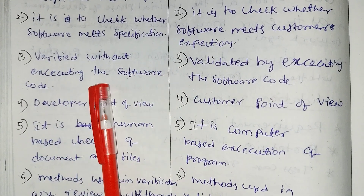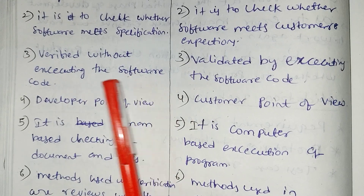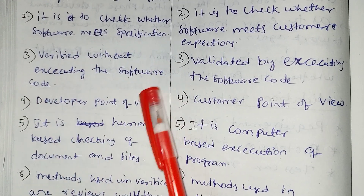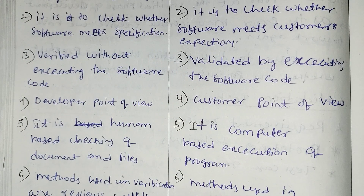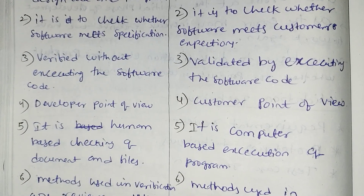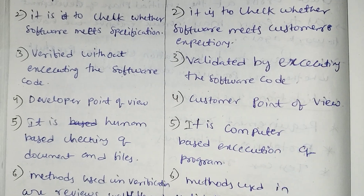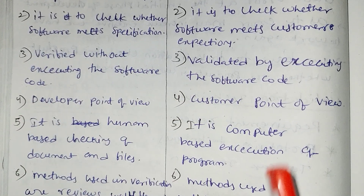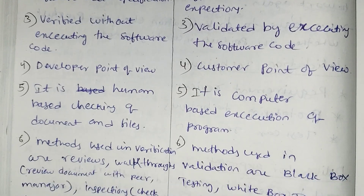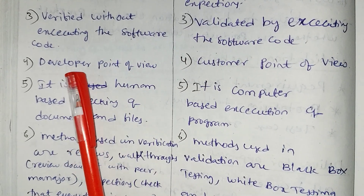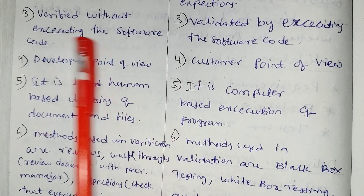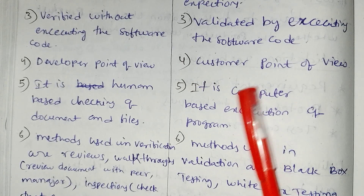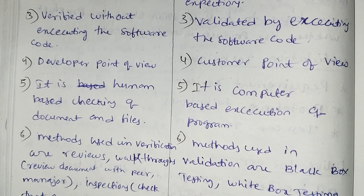Verification is done without executing the software code. Validation is done by executing the software code. Here we verify — we just choose the program. Here we execute the program and find errors. Verification is from the developer's point of view; validation is from the customer's point of view.